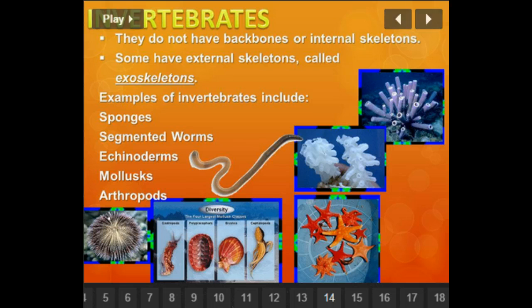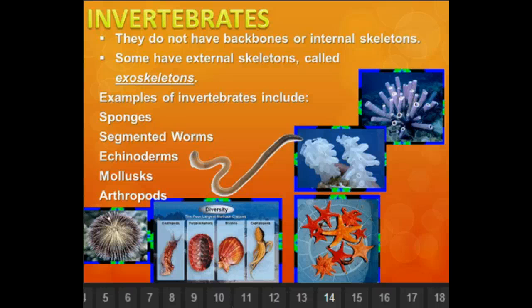The next topic is invertebrates. There are way more invertebrates than vertebrates — about 95% of animals are invertebrates, compared to only 3–5% vertebrates. Invertebrates do not have a backbone or internal skeleton. Some have external skeletons called exoskeletons — exo means outer, just like 'exit' means to go outside. Examples of invertebrates you should know are sponges, segmented worms like earthworms, echinoderms, mollusks, and arthropods.